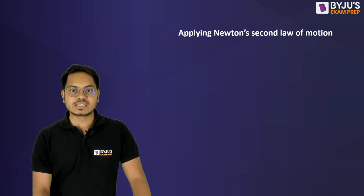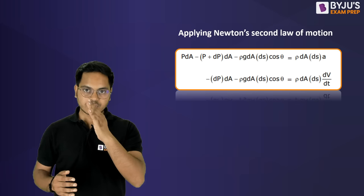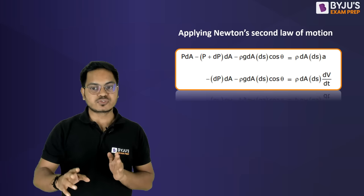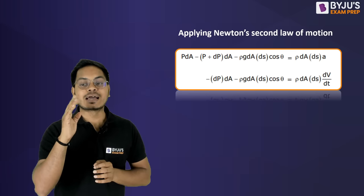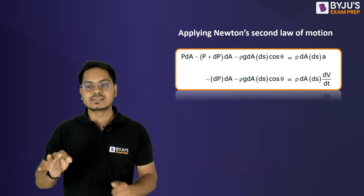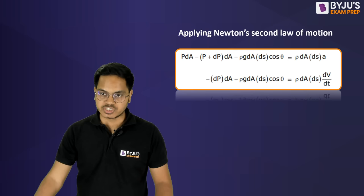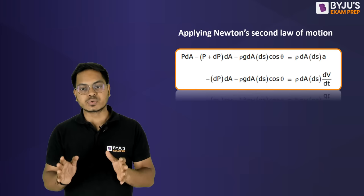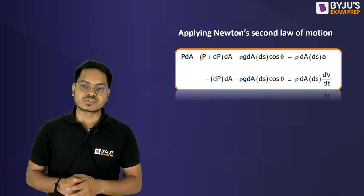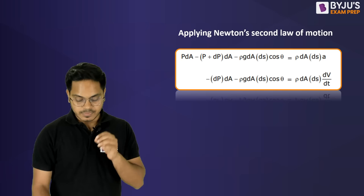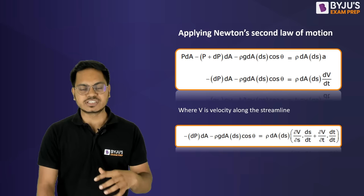Applying Newton's second law along the streamline: p·dA (upward) minus (p + dp)·dA minus ρ·g·dA·ds·cosθ equals ρ·dA·ds·a, where a is acceleration. Simplifying, we get: −dp·dA − ρ·g·dA·cosθ·ds = ρ·dA·ds·dv/dt. Here, v is the velocity along the streamline.